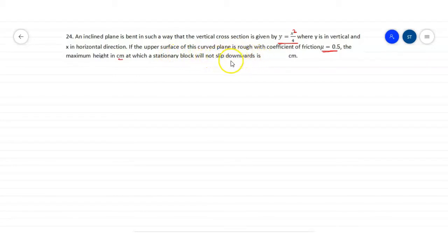At maximum height, the block will be experiencing the maximum force or limiting friction. We can say that the slope of the curve will be equal to mu, or this will be equals to tan theta r, where theta r is the angle of repose.